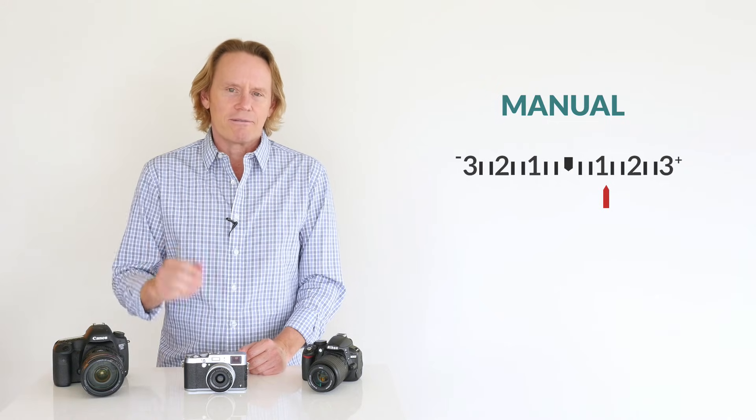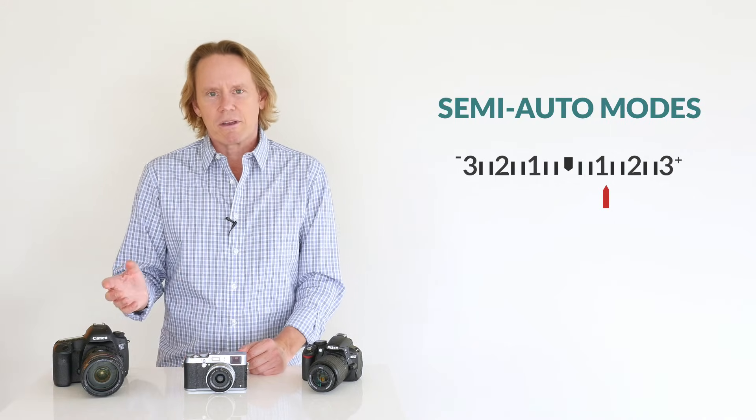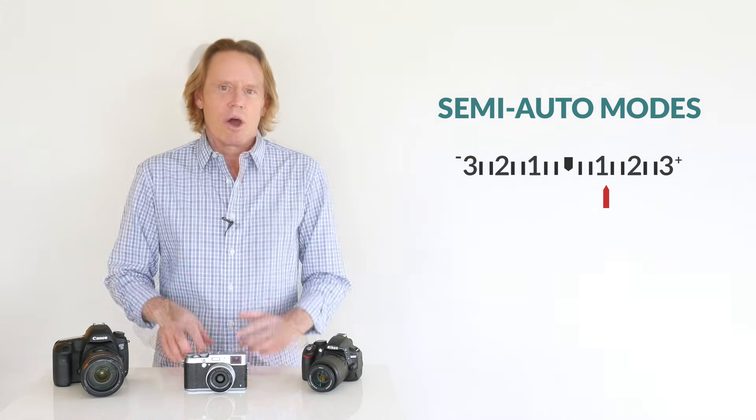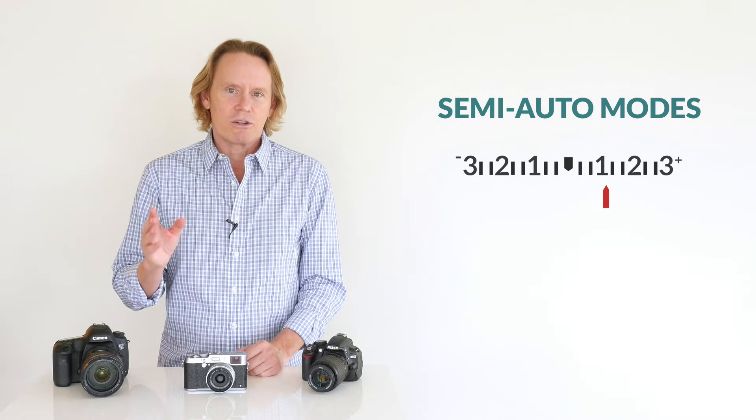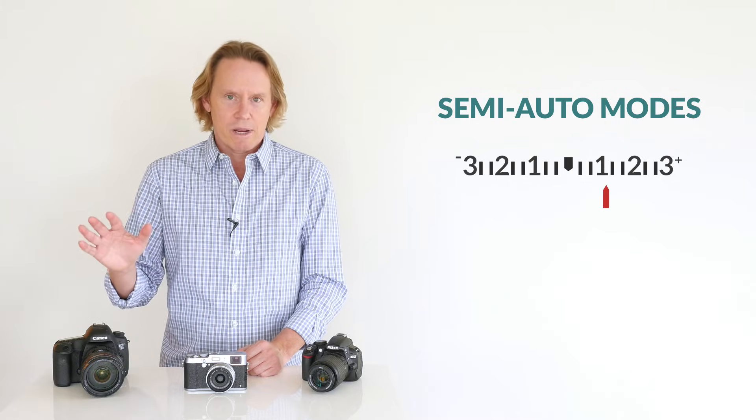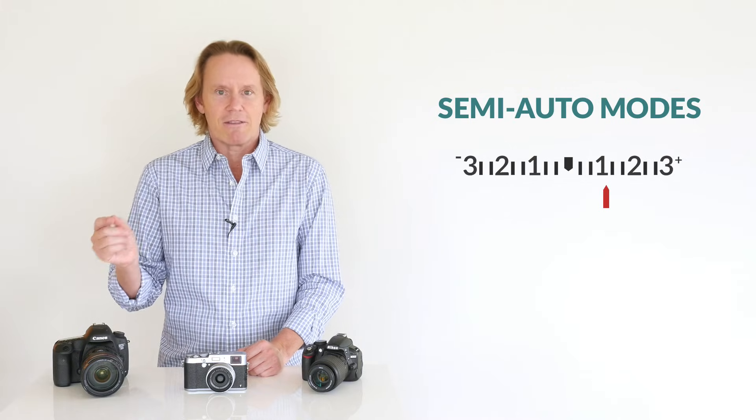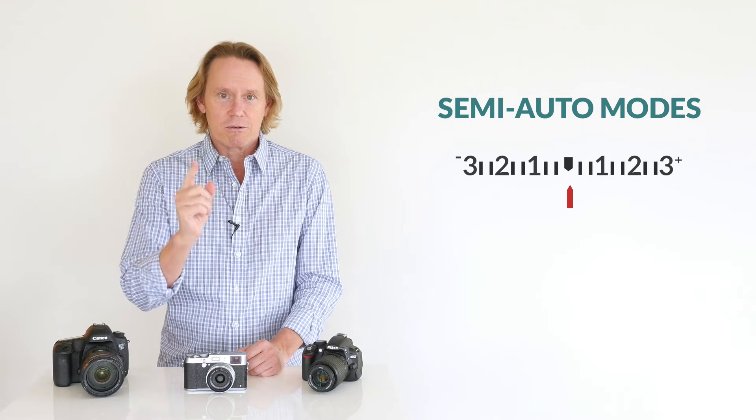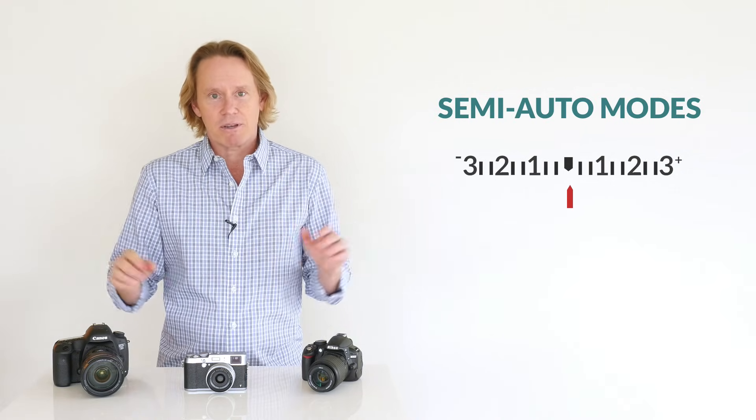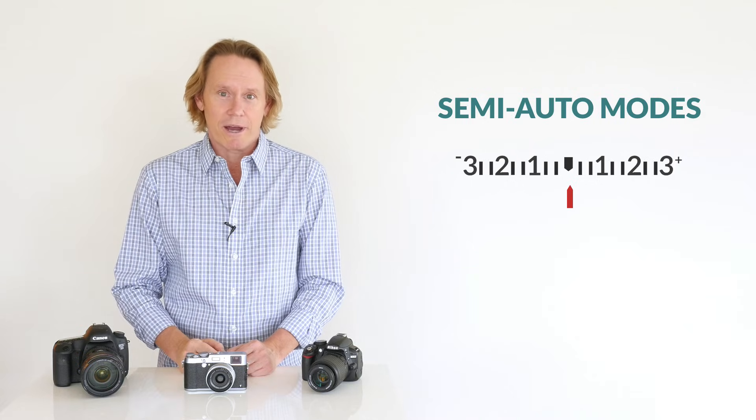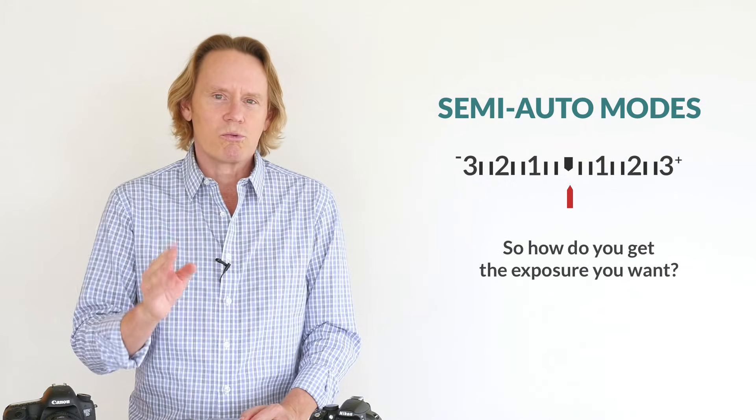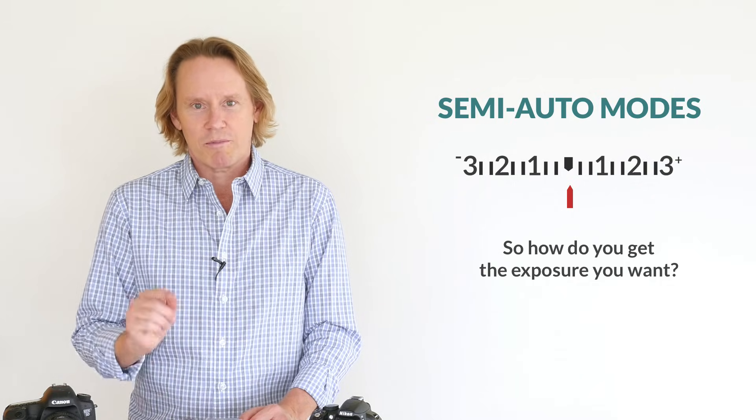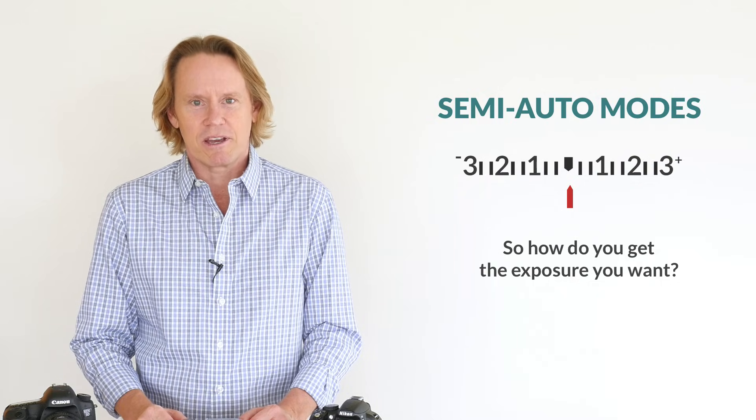But what if you're not in full manual mode? What if you're in one of the semi-automatic modes like aperture priority or shutter priority? Well in that case, the camera is going to do whatever it takes to create a middle gray exposure. It's going to adjust either the aperture or the shutter to move that pointer right to the center of the scale and average everything out to middle gray whether you like it or not. So how do you overrule the meter in that case and get the exposure that you want? Well, that's where exposure compensation comes in.